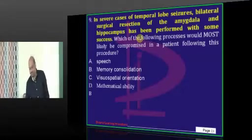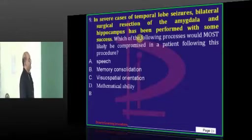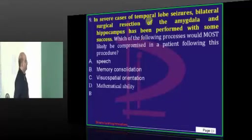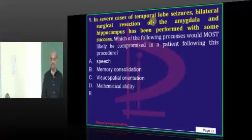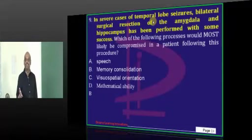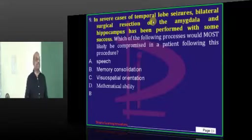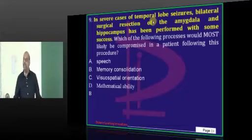In severe cases of temporal lobe seizures, if you want to do a bilateral resection of the amygdala and hippocampus, what is the main problem that can occur? All our memory is lying with the amygdala and hippocampus. The amygdala and hippocampus are also important for our emotions. That is the reason when we go to the reading room, we must be emotionally vibrant and enjoy the process of learning, reading, and memorizing. If we leave the amygdala at home and go to the reading room, we will only end up with boredom.